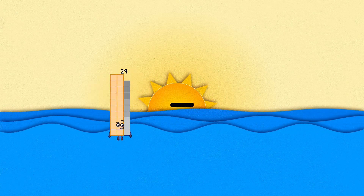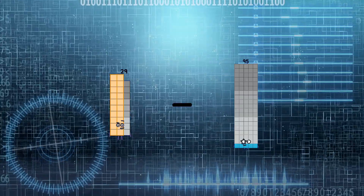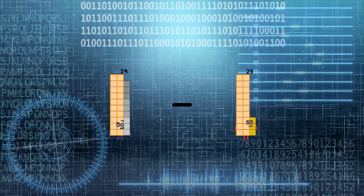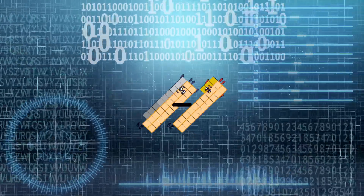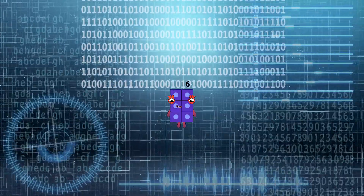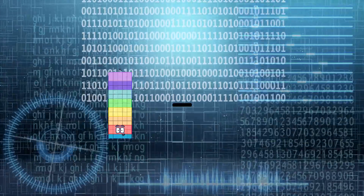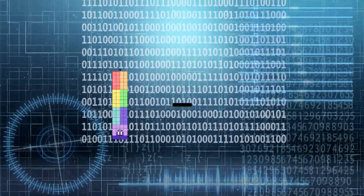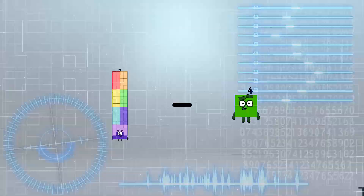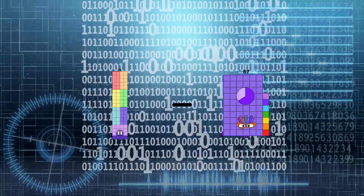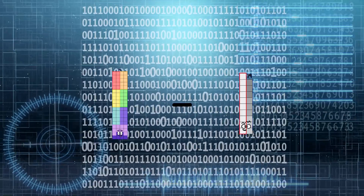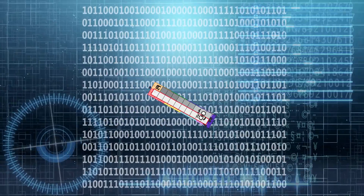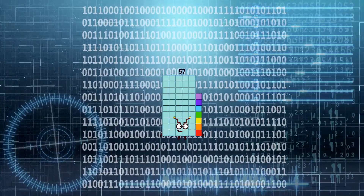29 minus 23 equals 6. 76 minus 19 equals 57.